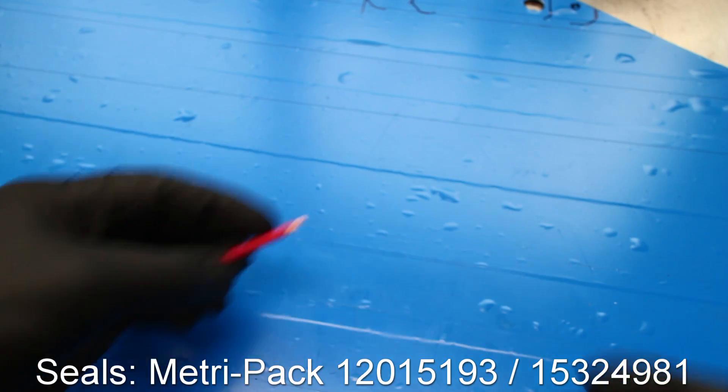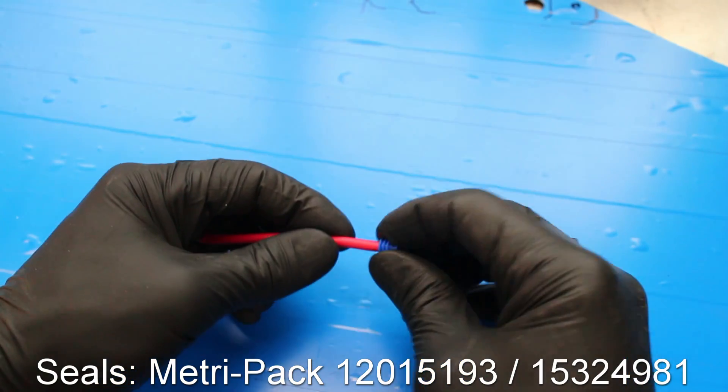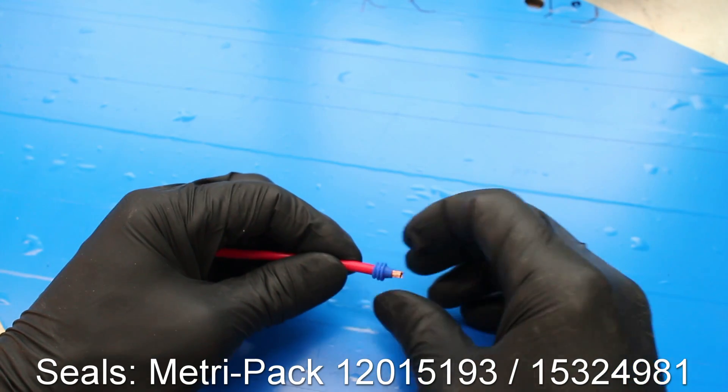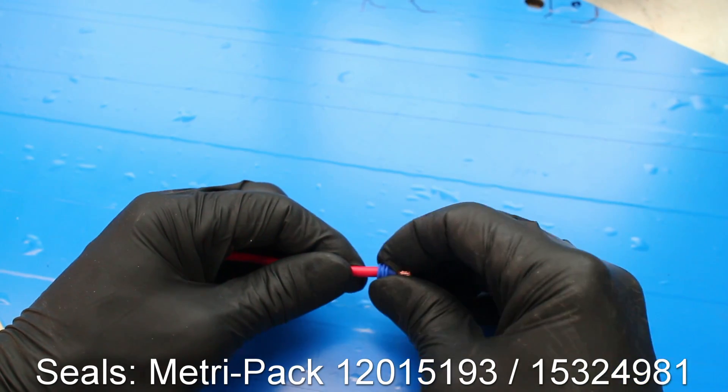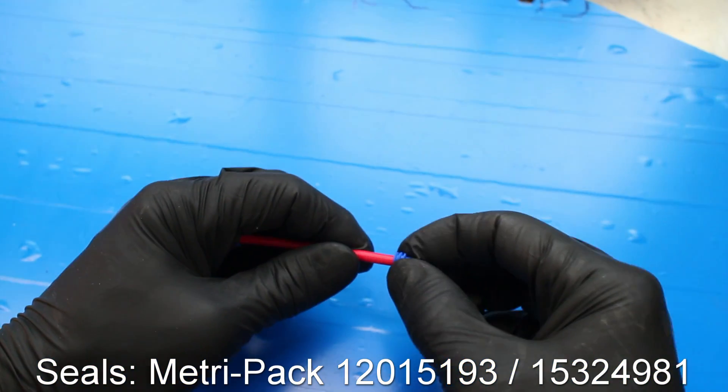Strip off the insulation and install the wire seal. These boxes require some custom tools and crimpers, but it's nothing that's too expensive. It's all available online.